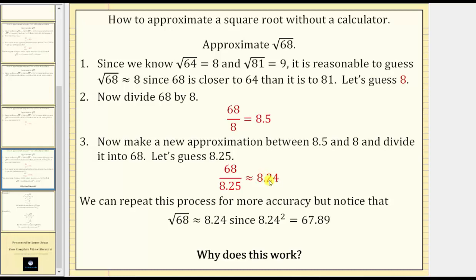Notice how 8.24 is very close to our approximation of 8.25, and therefore 8.24 is a good approximation for the square root of 68. We could repeat this process by making a new approximation between 8.24 and 8.25, but the square root of 68 is approximately 8.24, since the square of 8.24 equals 67.89, which is very close to 68.